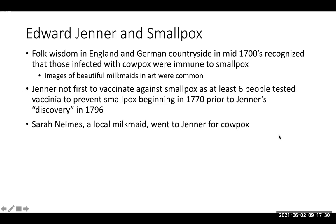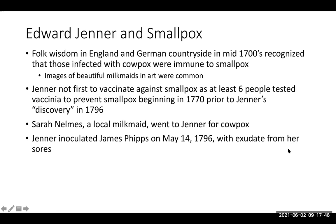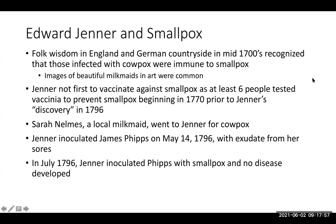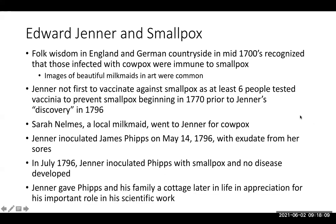A local milkmaid, Sarah Nelms, came to see Jenner for cowpox, and he had heard about using it to prevent smallpox. He then inoculated the son of his gardener, James Phipps, with exudate from her sores in May. A couple months later in July, he tested whether Phipps was truly immune, and no disease developed. They became friends and remained close throughout their lives. Later in Phipps' life, Jenner gave him a cottage in appreciation for his role as the person who went first in the best-known smallpox vaccine study.